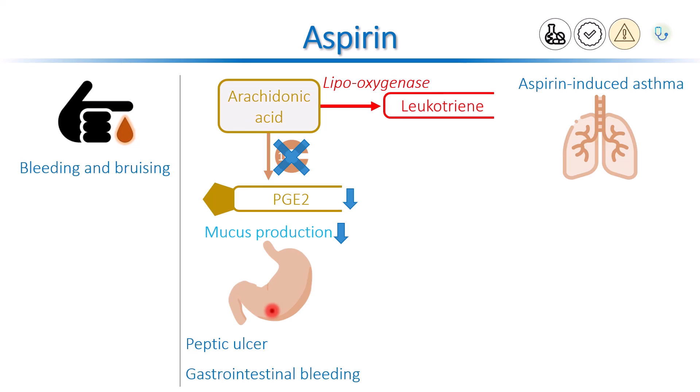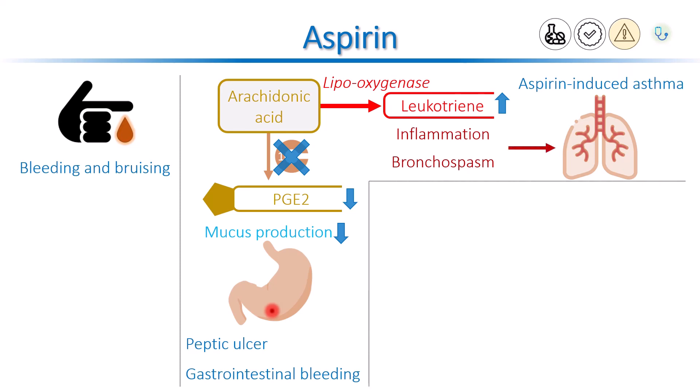Aspirin only blocks the COX pathway, but not lipoxygenase. As a result, more arachidonic acid is converted to leukotrienes. The problem is that excess leukotrienes cause inflammation, bronchospasm, and worsen nasal polyps. This can lead to asthmatic attacks in some patients. Aspirin should not be used in such patients.